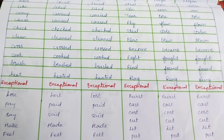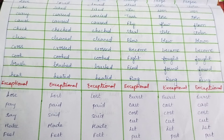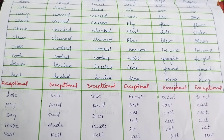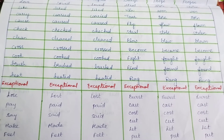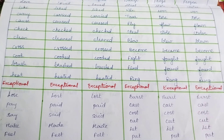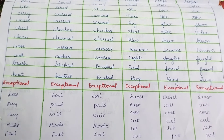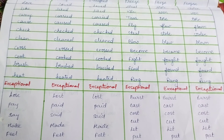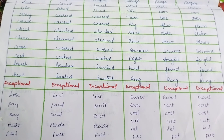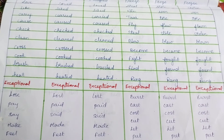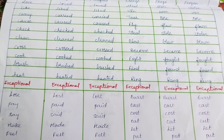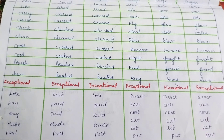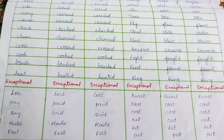Pay, paid, paid; say, said, said; make, made, made; feel, felt, felt. Why are they called exceptionals? They can't be regular or irregular because they don't follow either of the rules.